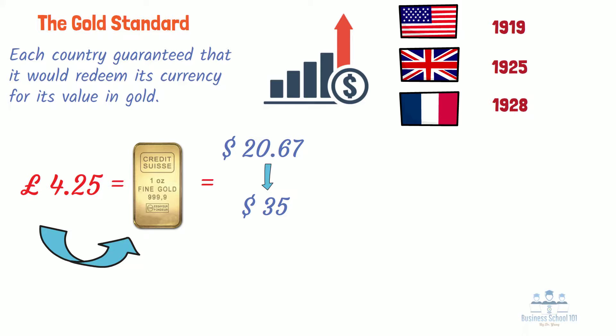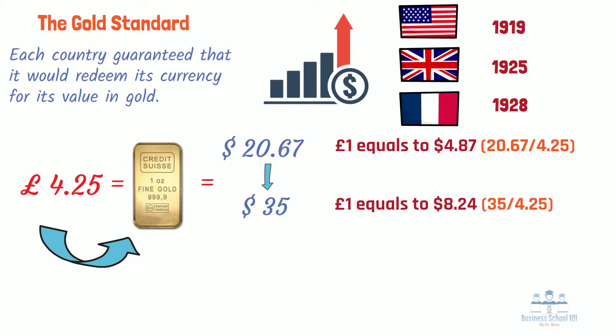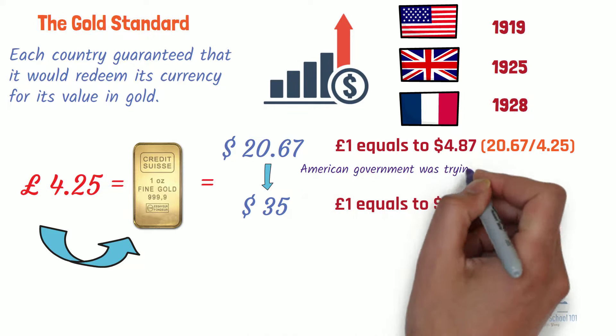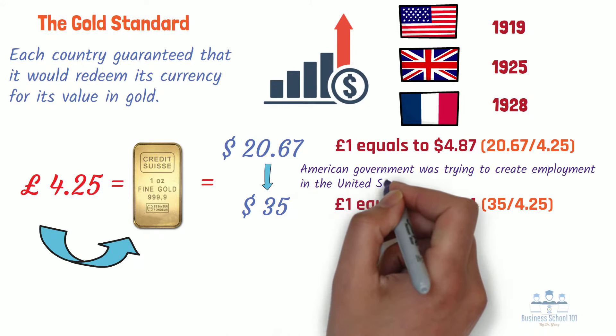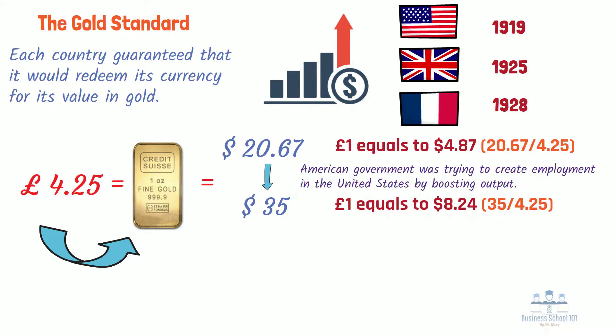Thus, before the devaluation, the pound-dollar exchange rate was one pound equals $8.24. By reducing the price of U.S. exports and increasing the price of imports, the American government was trying to create employment in the United States by boosting output. However, a number of other countries adopted a similar tactic, and in the cycle of competitive devaluations that soon emerged, no country could win. The net result was the shattering of any remaining confidence in the system.